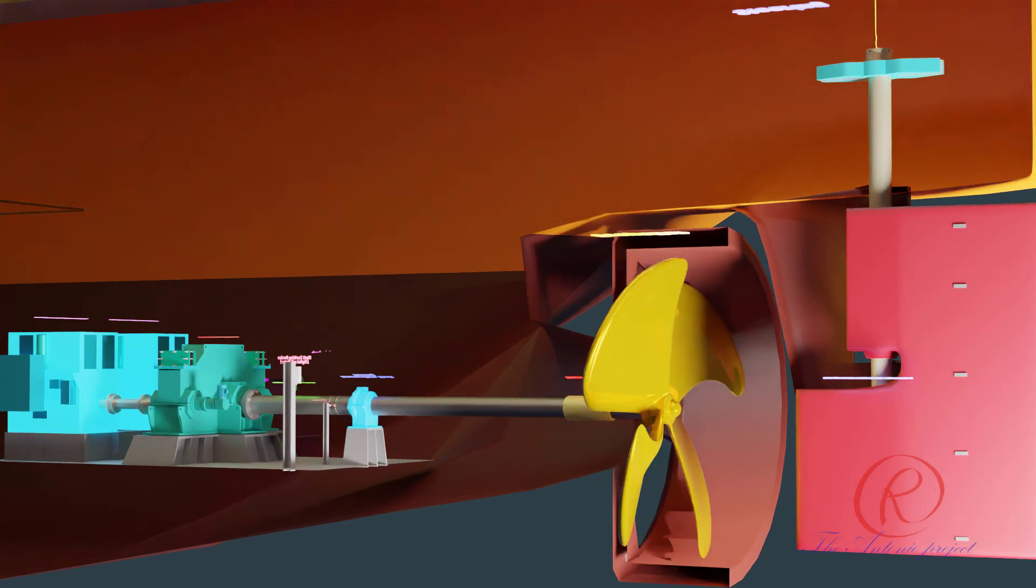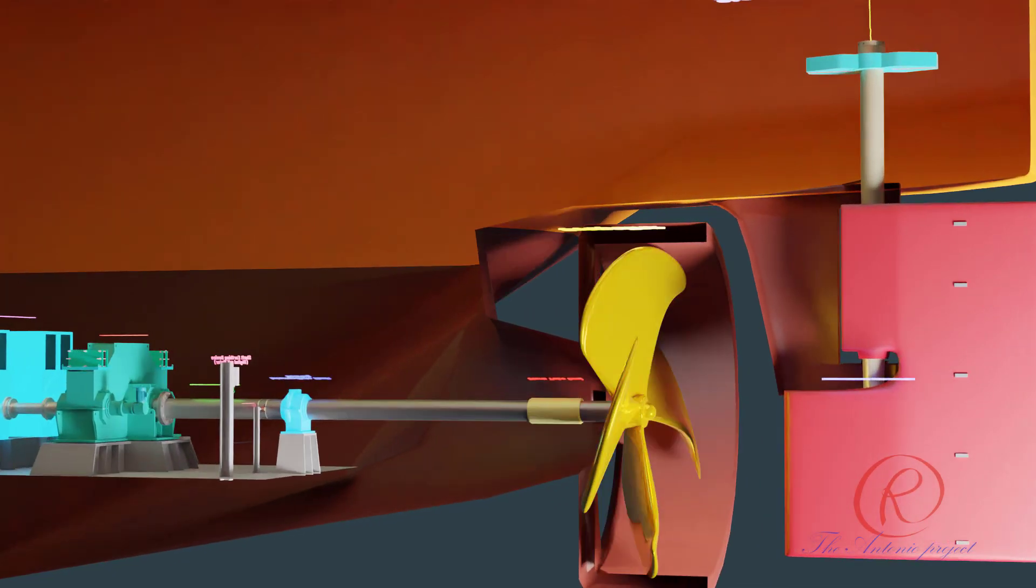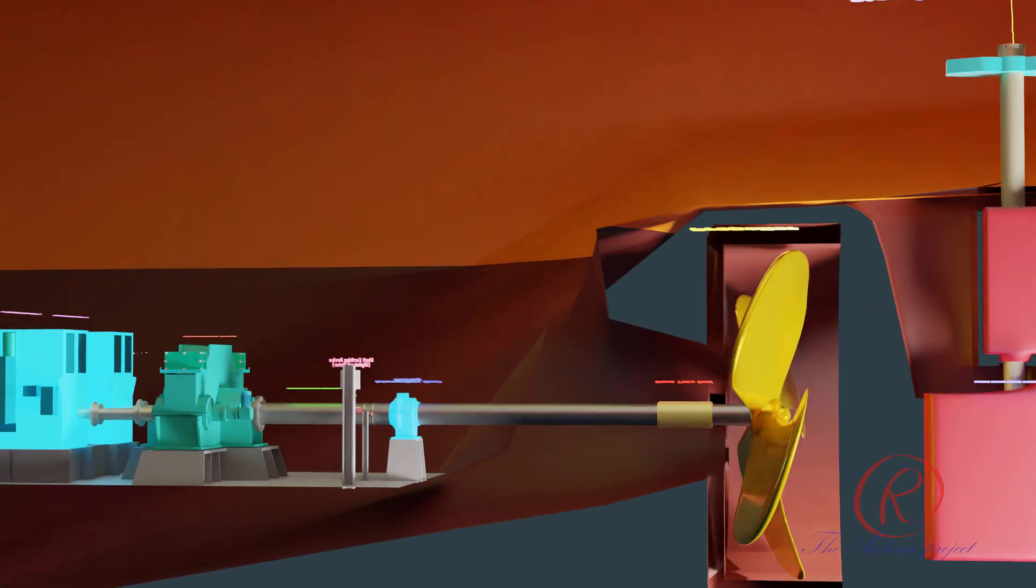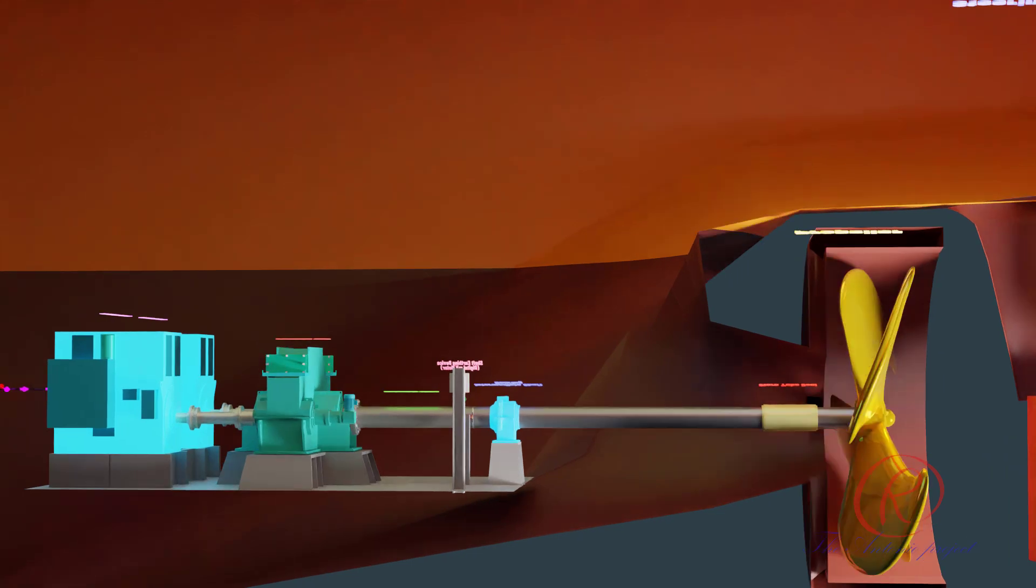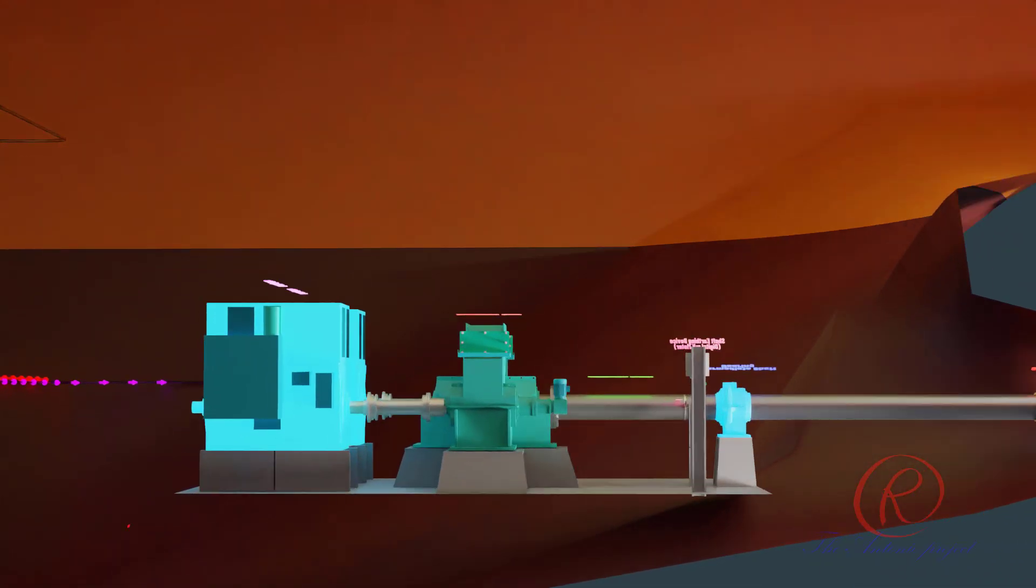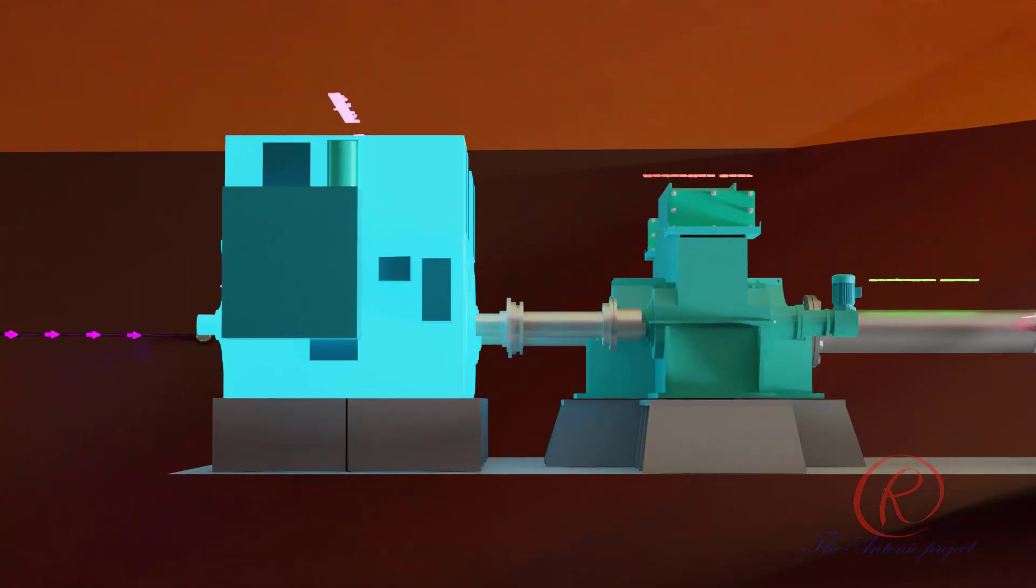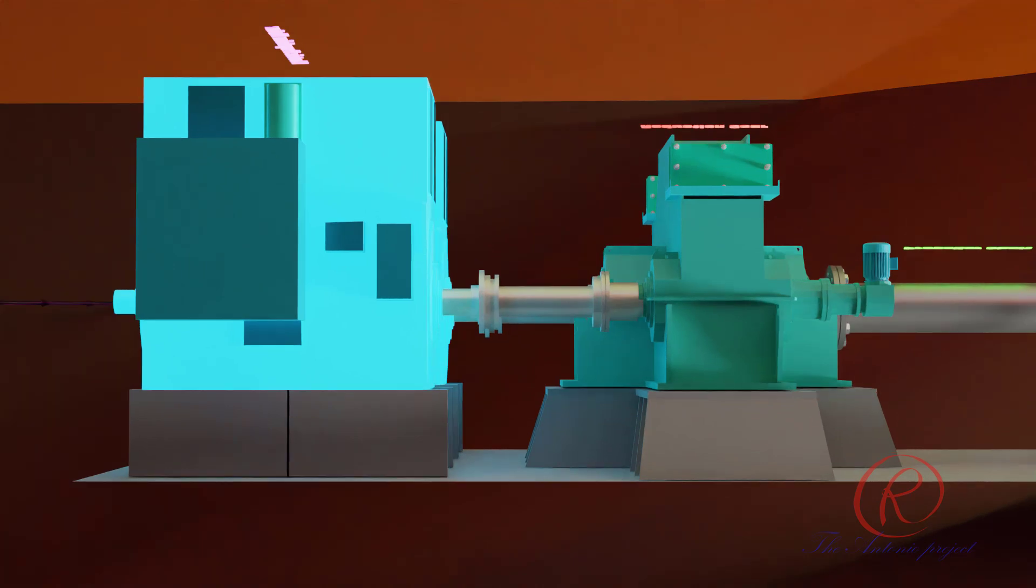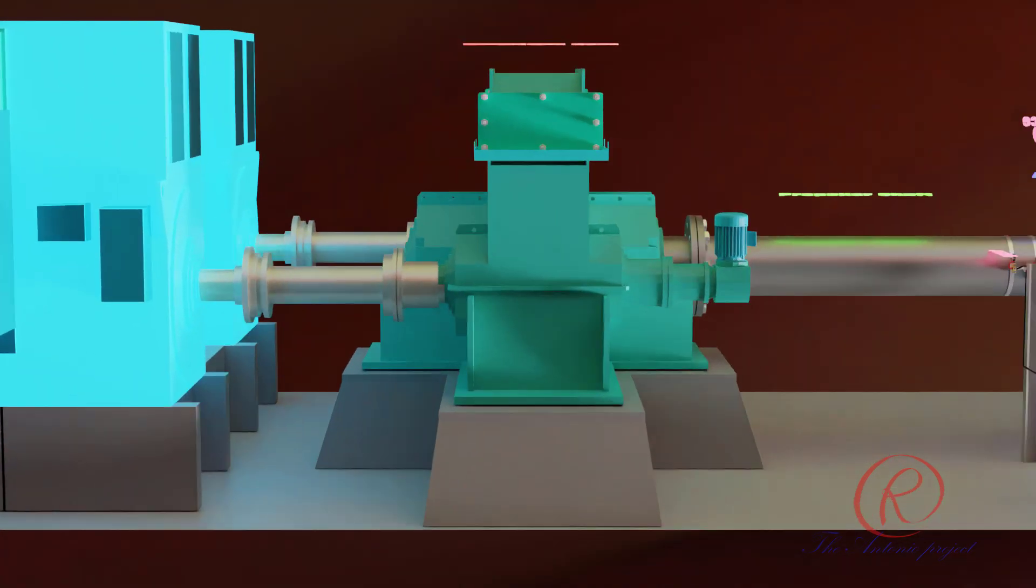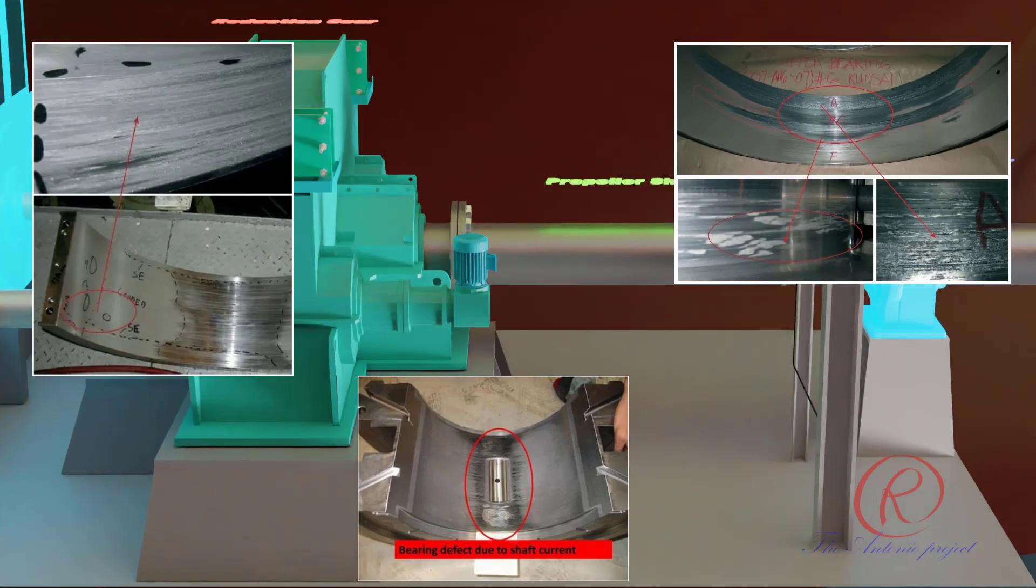If the ship has a system of cathodic protection, whether it is sacrificial anode or an impressed cathodic current protection system, the shaft insulation will prevent the propeller and the boss from receiving protection. The electrical potential between the shaft and the hull can also cause a heavy current to flow in bearings when the oil film breaks down or is contaminated with sea water.